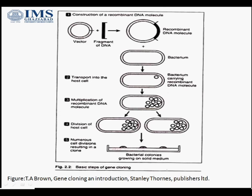The bacteria must be competent enough to carry this plasmid. Once the recombinant plasmid is inserted into the bacteria, the host is allowed to multiply and we get a number of recombinant molecules. As you can see, this single plasmid is now converted into a number of recombinant molecules as cell division takes place.